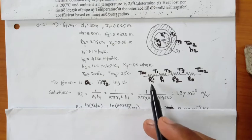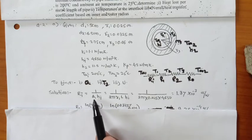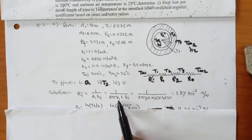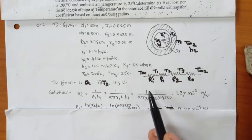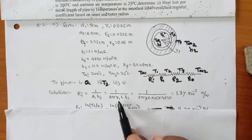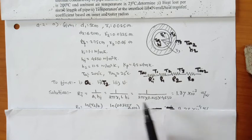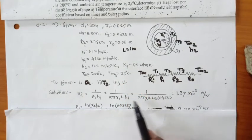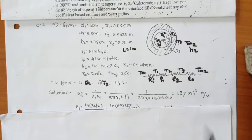First, we find thermal resistance inside the pipe. This is convection, so Ri = 1 / (A1 × H1), where A1 is the area corresponding to radius R1. Therefore Ri = 1 / (2π × R1 × L × H1) = 1 / (2π × 0.025 × 4650 × 1). Solving this gives the first thermal resistance Ri = 1.37 × 10⁻³ °C/W.